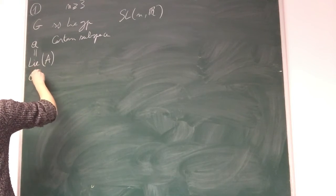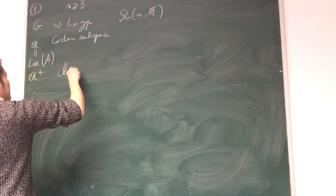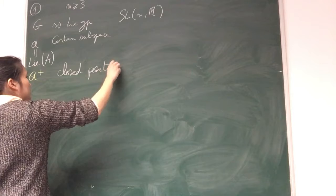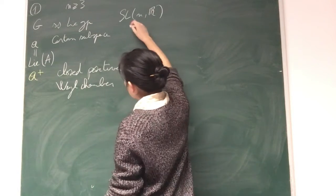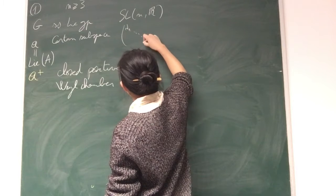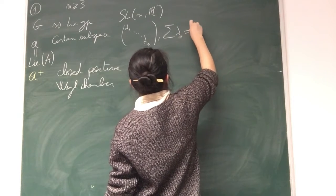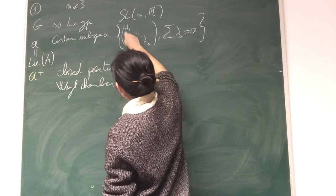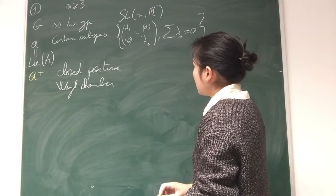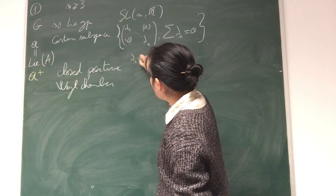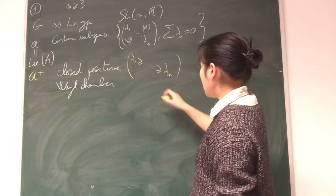Let me denote by A plus the closure of my positive Weyl chamber. For the choice of space, I'll take the zero trace matrices and diagonal matrices, and here I'll just order the eigenvalues in a decreasing way.